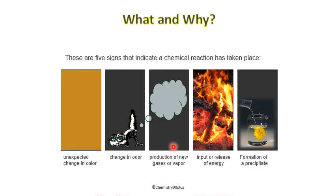Depending on the product formed, chemists can classify these reactions into different categories — different types. Why are they doing that? Because it helps chemists predict the product of an unknown but similar chemical reaction, just like weather experts use patterns to predict dangerous storms so people can stay safe. Similarly, chemists classify reactions to predict products.